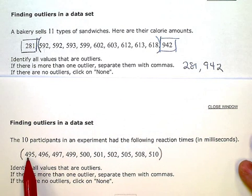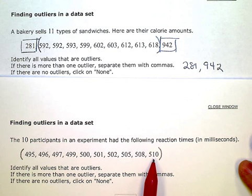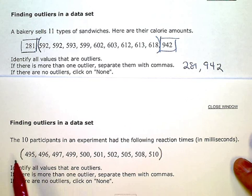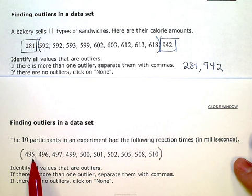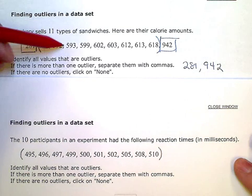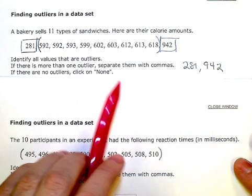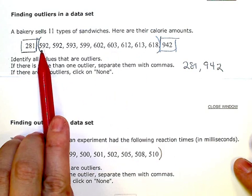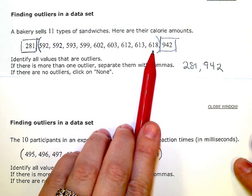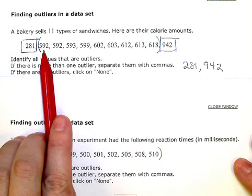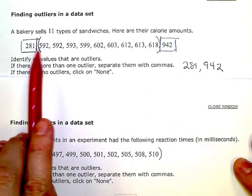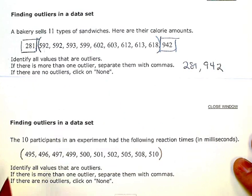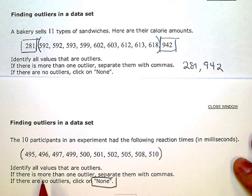Between 495 and 510, that's only a range of 15 milliseconds, and I had all 10 data points in that range. Whereas in the sandwich example, I had 9 calorie counts that fell between 592 and 618 — a range of 26 — and then I had those two that were way outside of that. So this one right here would have no outliers. I would just click none because all of these data points are really very close together.